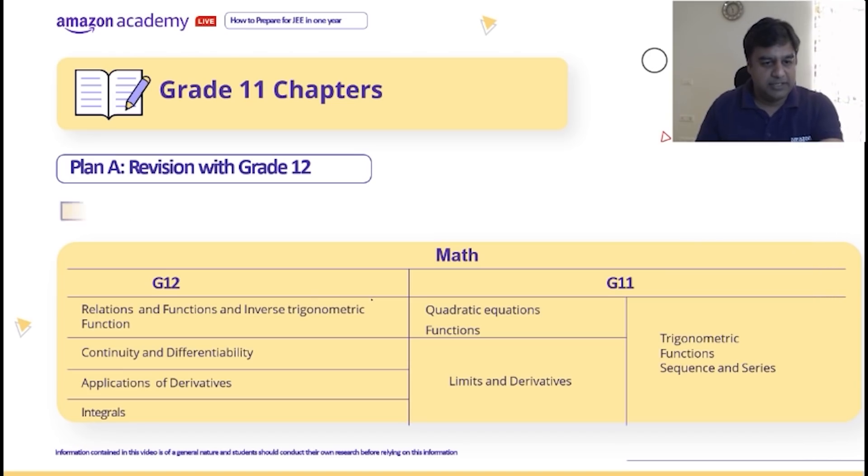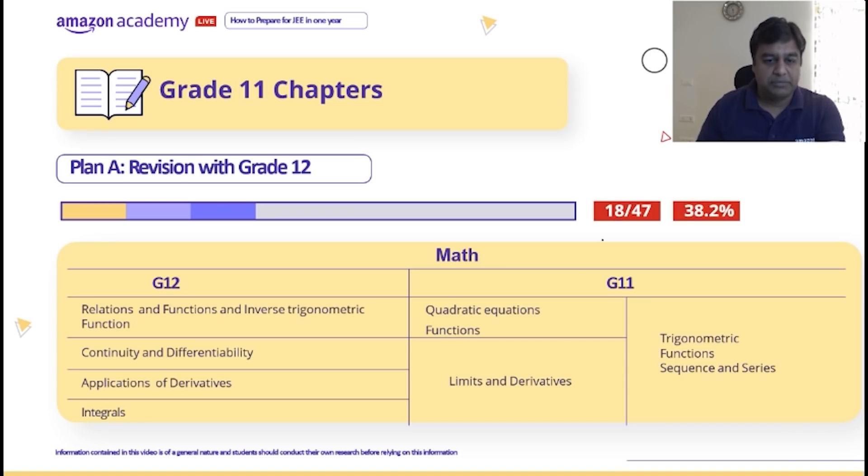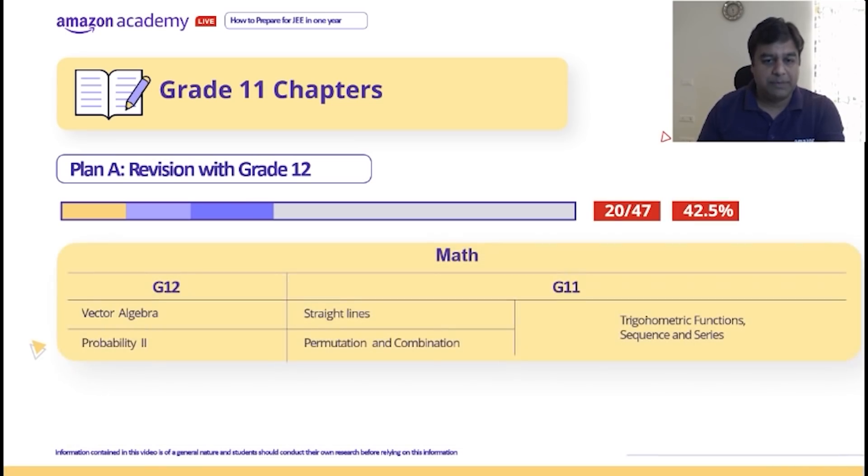Similarly in maths, you can see this is also here. How many are we? One, two, three, four, five, six. Five chapters and then two more chapters. These chapters total 42% coverage already.